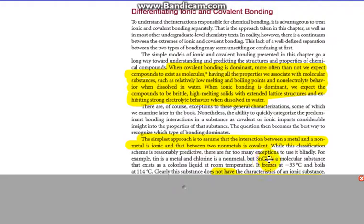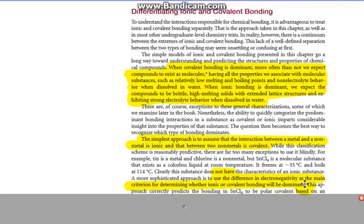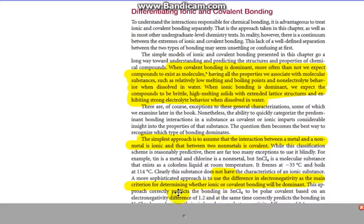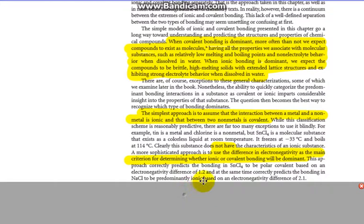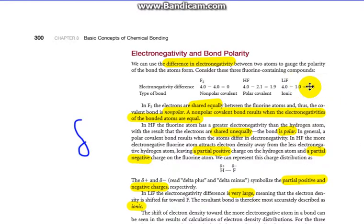This classification scheme is reasonably predictive, but there are quite a few exceptions rather than use it blindly. For example, tin is a metal and chlorine is a non-metal, so we'd expect that to be ionic, but it is molecular. It exists as a colorless liquid at room temperature, freezes at negative 33 and boils at 114. Those are both considered low boiling and low melting points compared to sodium chloride which is in the thousands. Clearly this substance does not have characteristics of an ionic substance.